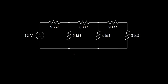One approach is to begin by reducing the circuit to a single loop. We'll begin by replacing the 9-kilohm resistor and the 3-kilohm resistors that are in series with a single 12-kilohm resistor. After that, we can look at the parallel combination of 4-kilohm and 12-kilohm and replace those with a single 3-kilohm resistor.